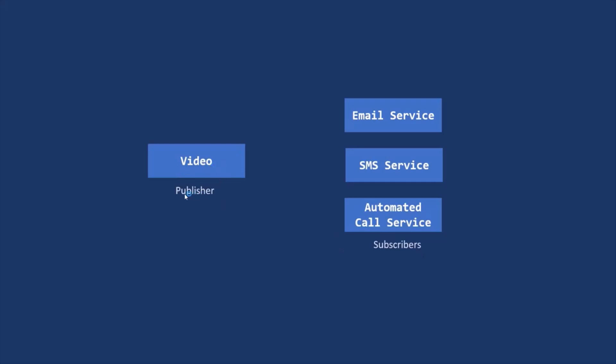Now let's say this Video class, which is the Publisher, is responsible for uploading the video. So when the video is completely uploaded, these Subscribers are interested in knowing that, so that they can execute some logic after the video is completely uploaded. When the video is completely uploaded, this Video class, which is the Publisher, is responsible for notifying these Subscribers about that event.